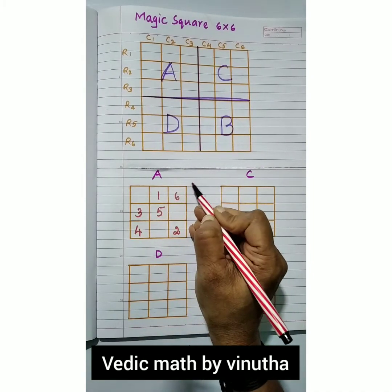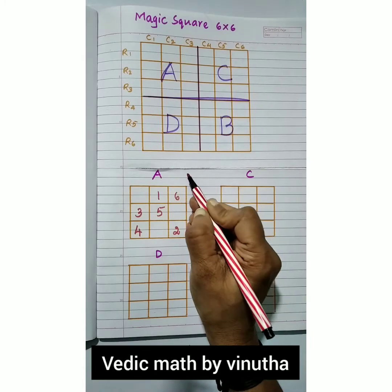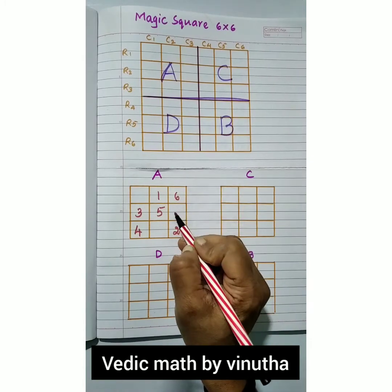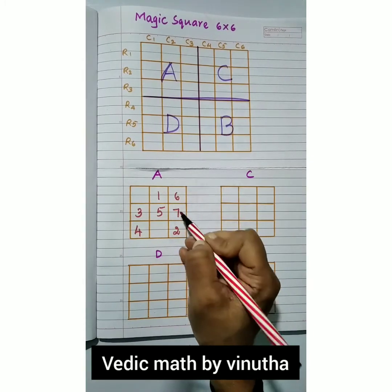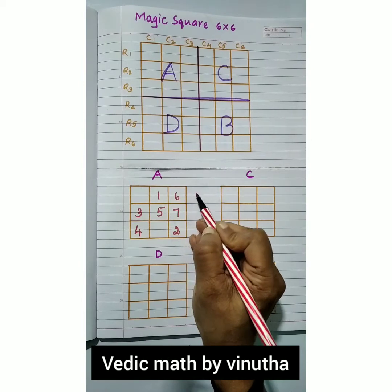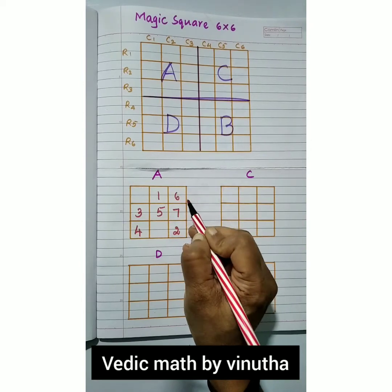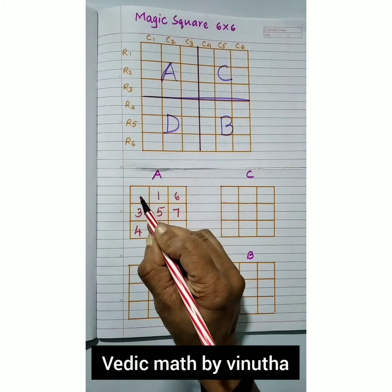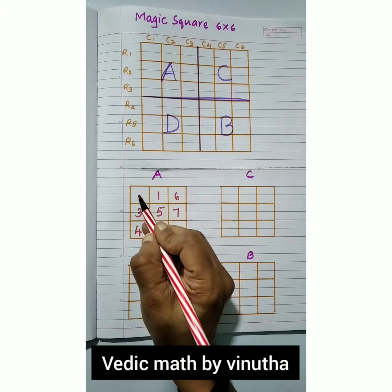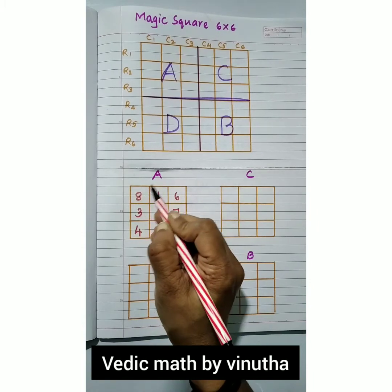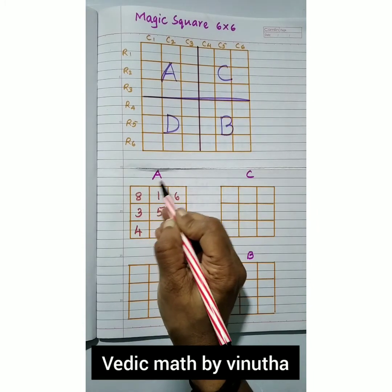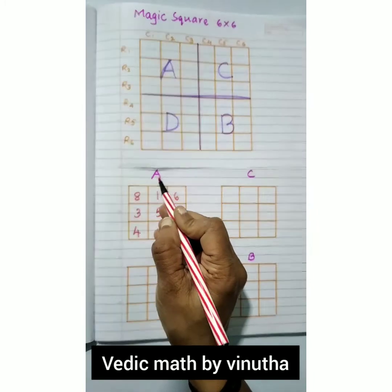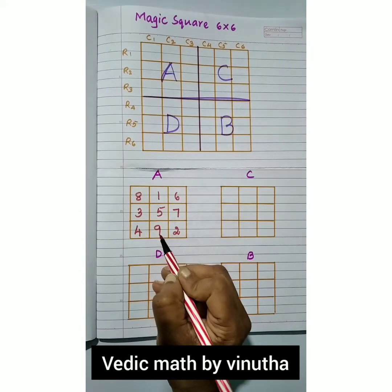Continue diagonally for 5 and 6. For the next diagonal move there is no box available, so go just right below that 6 — that is 7. Again diagonally for 8, but if no box is available go to the row end and write 8. Moving diagonally, if there is no box, go to the column end and write 9.